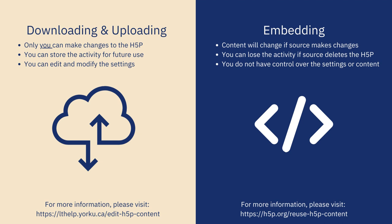The second option is to use the embed code to bring the tool into eClass. With this option, since you're not downloading the file, you can no longer make changes to the H5P, but you can use it as is. This is a quick option and one benefit is if the original owner of the H5P makes changes to the H5P, it will automatically update for you as well.